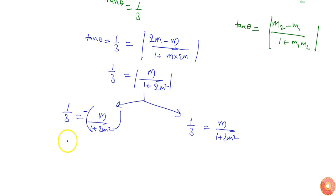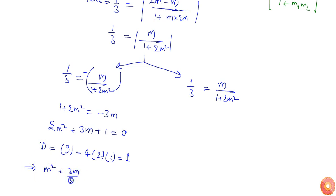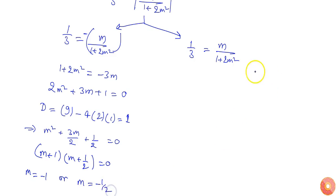From the first case, 1 + 2m² = −3m, which gives 2m² + 3m + 1 = 0. The discriminant is b² − 4ac = 9 − 8 = 1. Factoring, we get (m + 1)(m + 1/2) = 0, so m = −1 or m = −1/2.